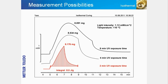Curing with UV light has the advantage that temperature-sensitive substrates can be used and that hardly any volatile organic compounds are released. In practice, the main question is how long the material needs to be exposed to UV light in order to achieve an adequate degree of cure or cross-linking. The slide shows several experiments performed to measure the degree of cure after exposure to light for different times at 110 degrees. The optimum exposure time can be determined by observing when the exothermic reaction peak is complete.